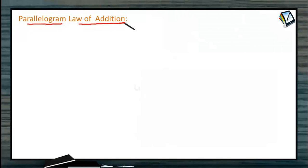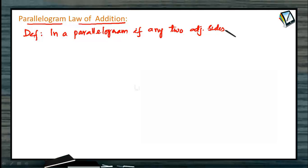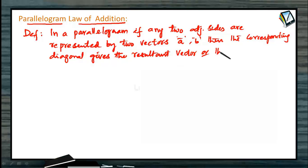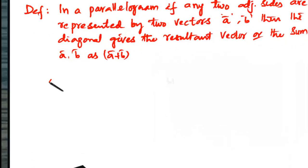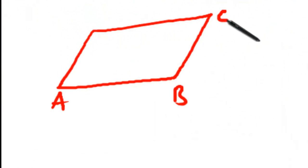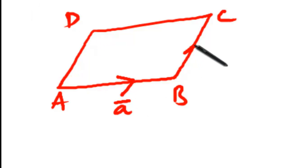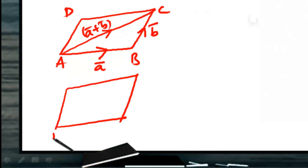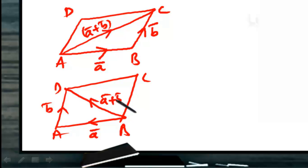Secondly, we go to the parallelogram law of addition, which is the second formula to explain vector addition. In a parallelogram, if any two adjacent sides are represented by two vectors Ā and B̄, then the corresponding diagonal gives the resultant vector, or the sum Ā plus B̄. In parallelogram ABCD, if AB̄ is given by Ā and BC̄ is given by B̄, then the corresponding diagonal AC̄ gives the resultant Ā plus B̄. Similarly, if BĀ is given as Ā and AD̄ is given as B̄, then BD̄ would be their resultant Ā plus B̄.